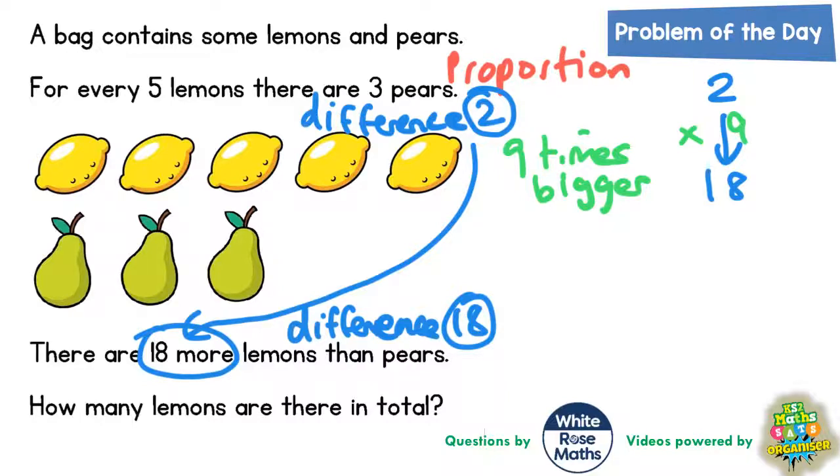The easiest way to set this out is like this. We'll write L for lemons and P for pears, and we can write it as a ratio. There are five lemons for every three pears, so we write that as a ratio of 5 to 3.